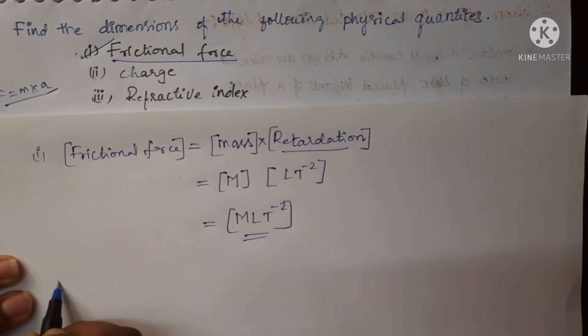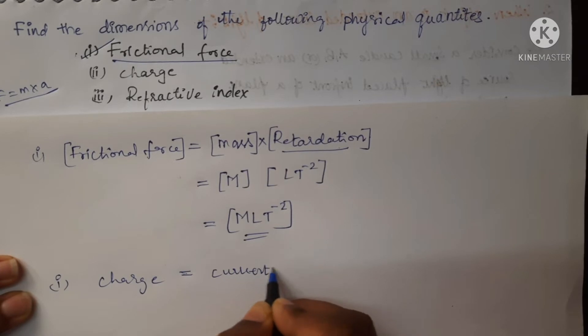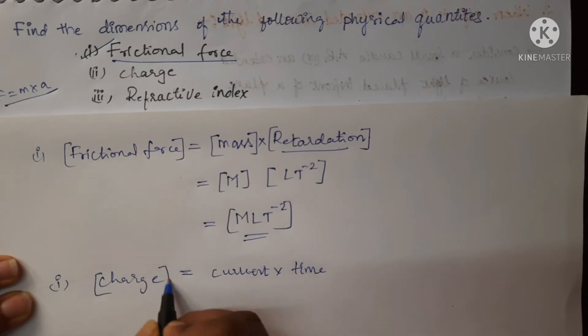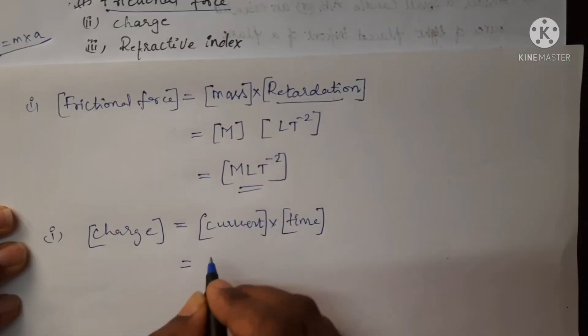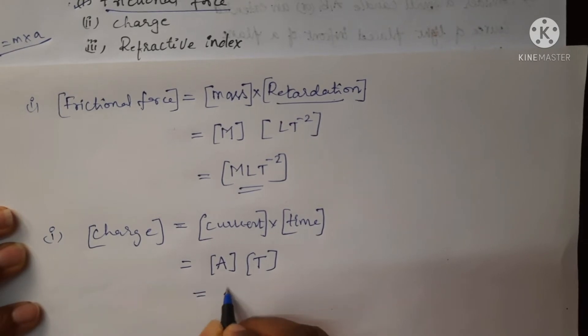Let's see the second one, charge. Charge equals current multiplied by time. Here we are finding the dimensions of charge. The dimension formula of current is A and time is T. So the dimensions of charge is AT.